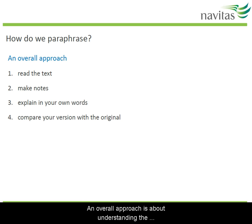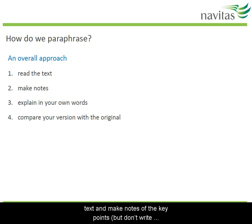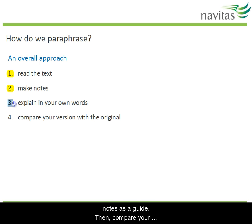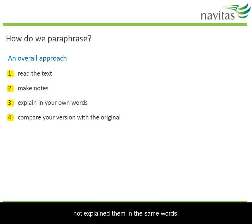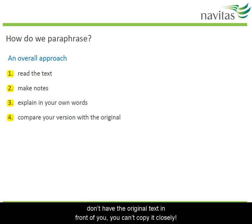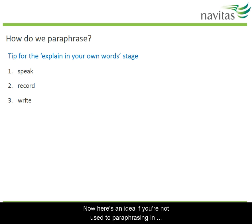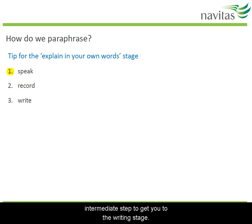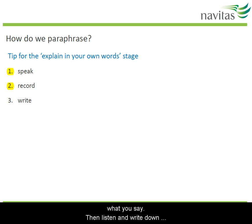An overall approach to paraphrasing is to understand the information, then put it away and explain it yourself. First, read the text and make notes of the key points — but don't write down whole sentences. Then put the text away and explain the information in your own words using your notes as a guide. Compare your paraphrase with the original; you should have covered the main ideas accurately, but not in the same words. If you're not used to written paraphrasing, try recording yourself explaining something — you can use your phone — then write down what you said and edit as needed.